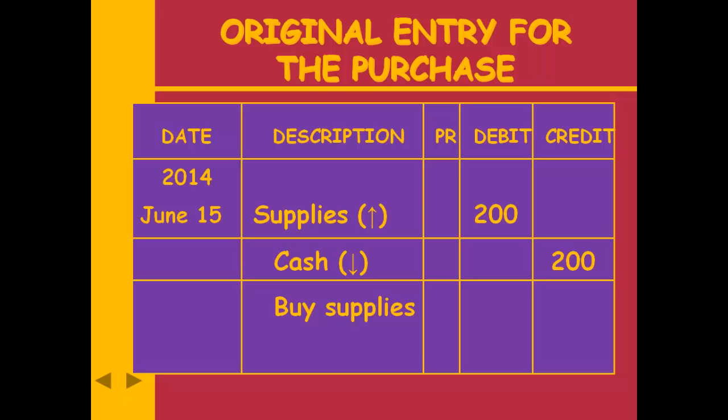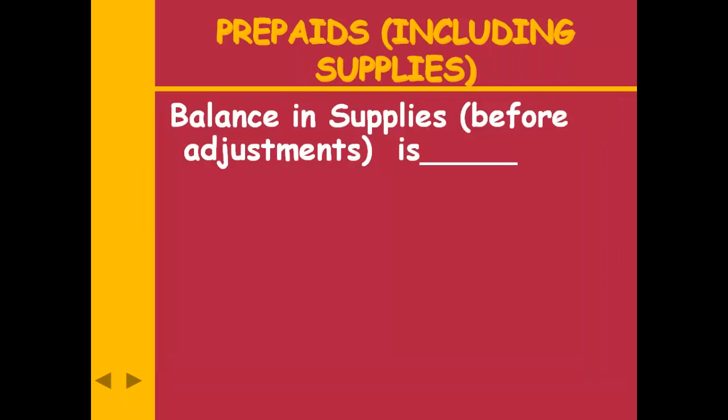This is not an adjusting entry — this is a Chapter 2 plain entry. We debit supplies to make the asset go up, and credit cash to make the asset go down. After making this entry, what is the balance in the supplies account? We had $100, then added $200, so now we have a $300 balance.